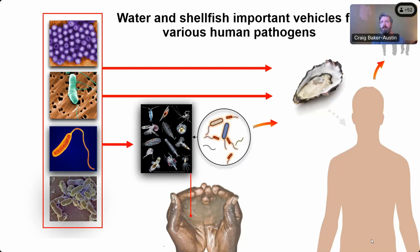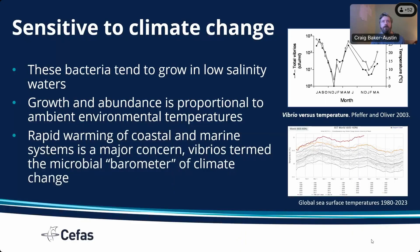There are other pathogens as well that are transmitted very effectively through this medium into human populations, and there's a big area of global science around studying these types of pathogens. The real reason why Vibrios are on the rise and why we're going to have significant problems in the future is because of climate change. These bacteria grow preferentially in low salinity water; their growth and abundance is proportional to ambient environmental temperatures. This rapid warming of marine and coastal systems around the world means we're now calling them a barometer of climate change. This figure top right shows data from an estuary in the United States.